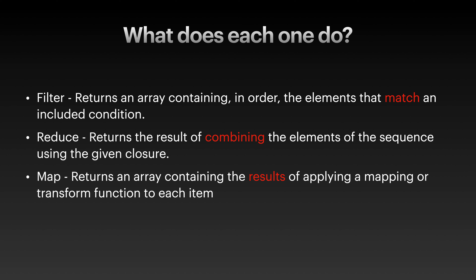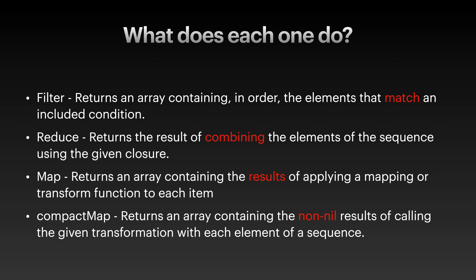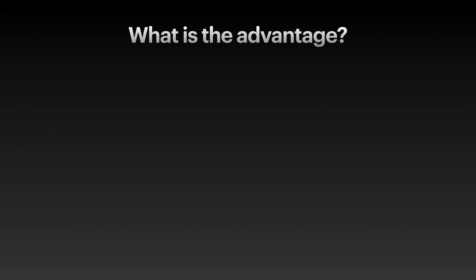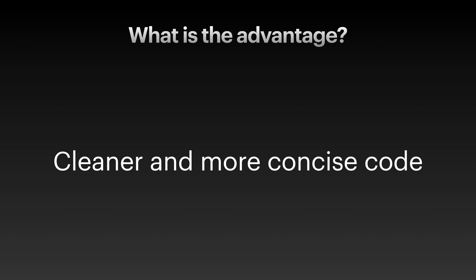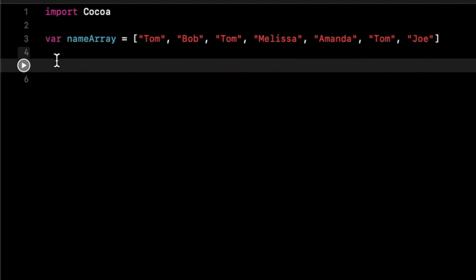Compact map returns an array containing the non-nil results of calling the given transformation with each element of the sequence — it won't contain any null values because they're going to be discarded. So if you're working with optionals, this is going to be very useful. The advantage of all these is that it comes down to cleaner and more concise code. Now let's get to some examples.